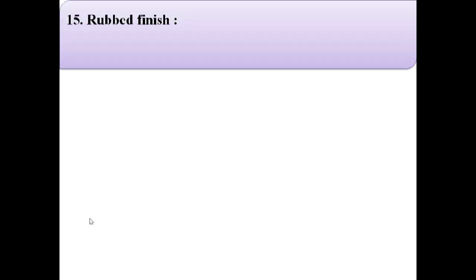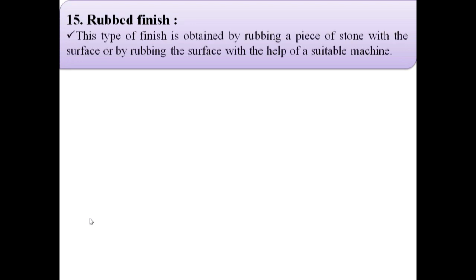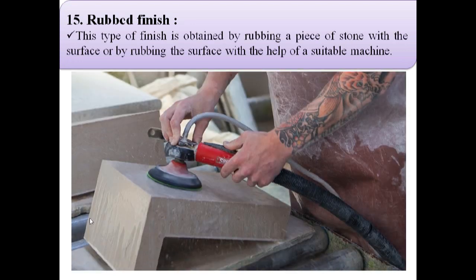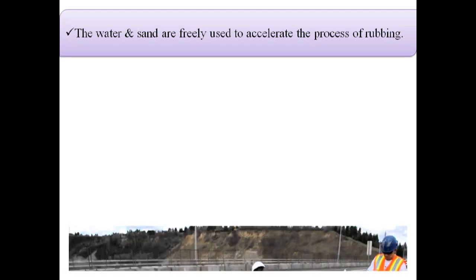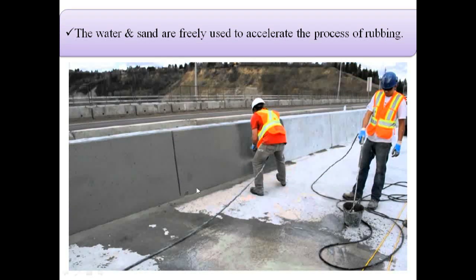The next finish is rubbed finish. This type of finish is obtained by rubbing a piece of stone with the surface, or by rubbing the surface with the help of a suitable machine. Water and sand are freely used to accelerate the process of rubbing, as shown in these images.